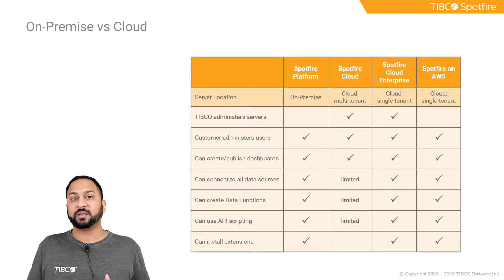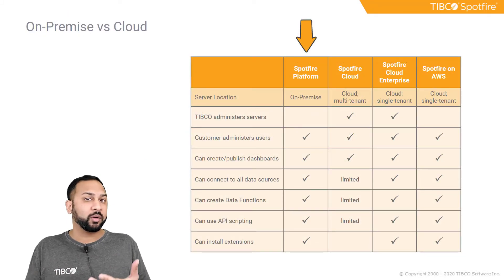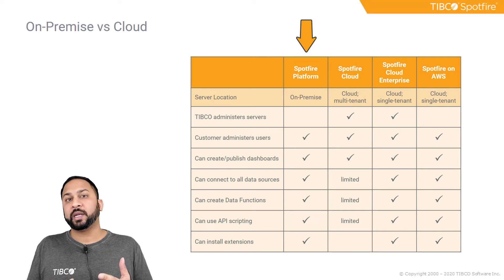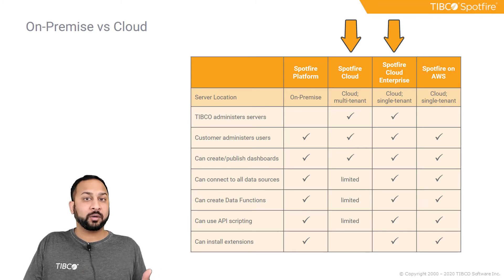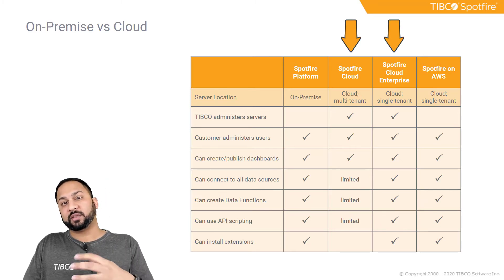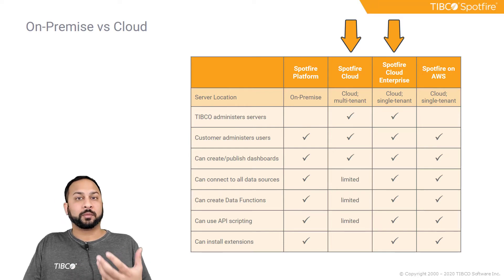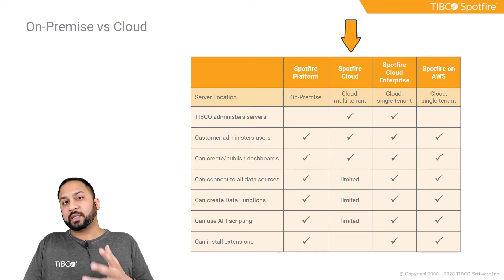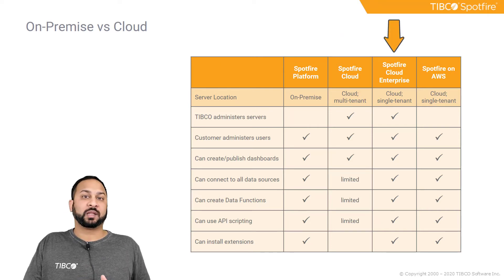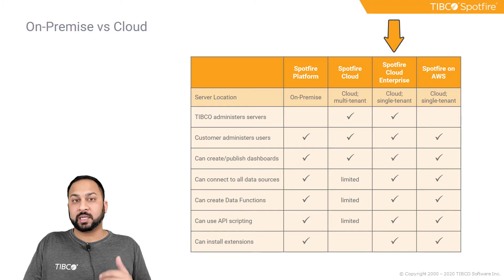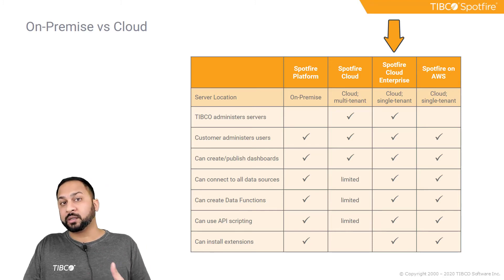Talking about the different editions of Spotfire: there's an on-premise version installed at your organization on your organization's servers, managed by your organization's administrators, with full access to everything you might need. There are also cloud versions managed by TIBCO, administered from the server and the library. There's a multi-tenant version on Spotfire Cloud, which allows most things except some features like API scripting and data functions due to security concerns. Or you can use the single-tenant version — Spotfire Cloud Enterprise — where you have access to everything, essentially the same as on-premise except TIBCO administers the Spotfire server.